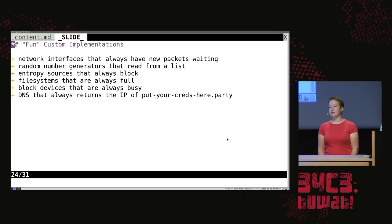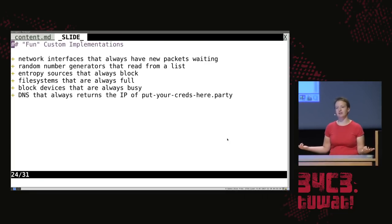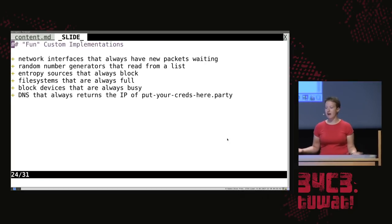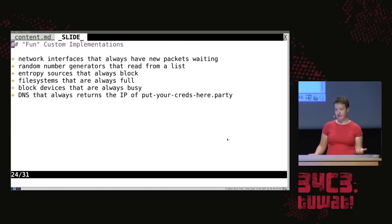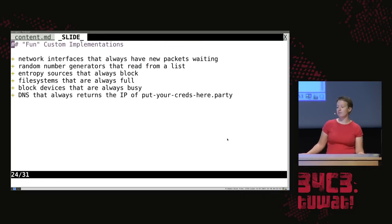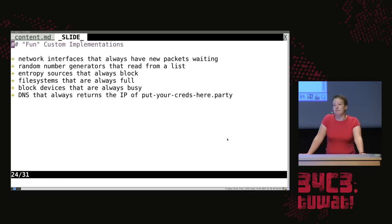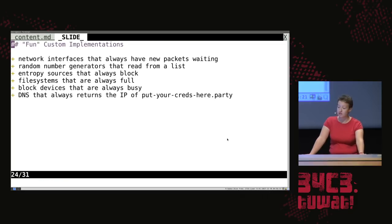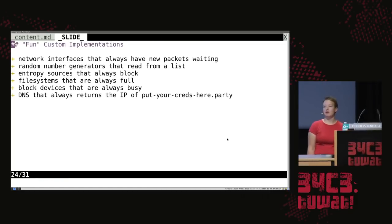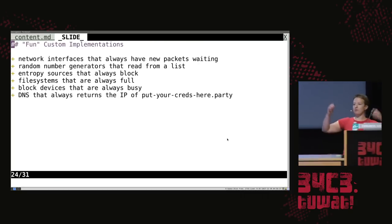In Mirage OS we've come up with several fun custom implementations of various things, like network interfaces that always have new packets waiting. A really nice thing is always being able to swap out the random number generator, so all your tests can be deterministic even if they want to read from some source you haven't set up. Similarly, entropy sources that always block is interesting. Application code often fails when the file system is full, a block device is busy, it gets short reads from the network, or your DNS has been hijacked — when the implementations are just modules, it's really easy to drop in one that's broken in a way that you think is cool.